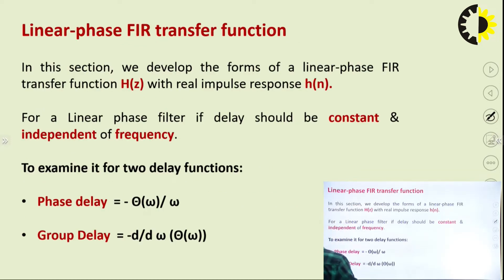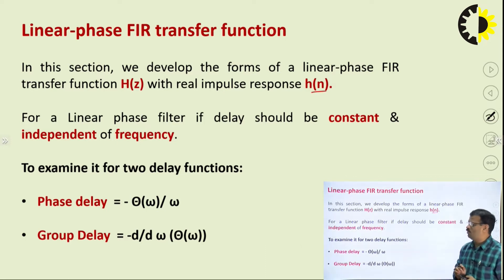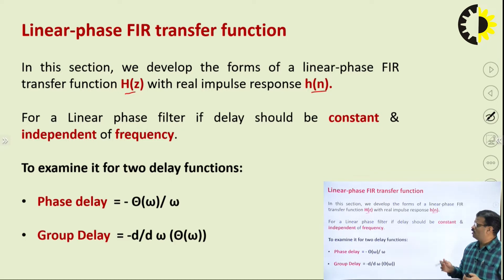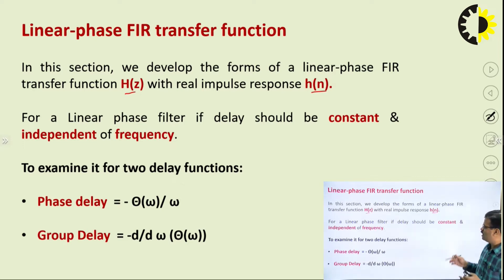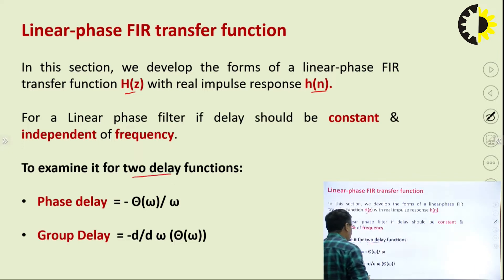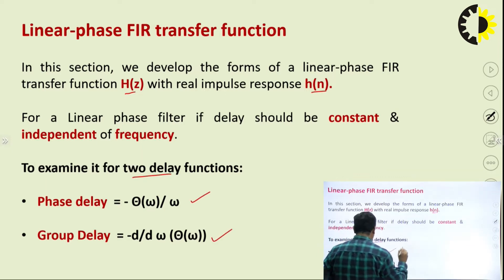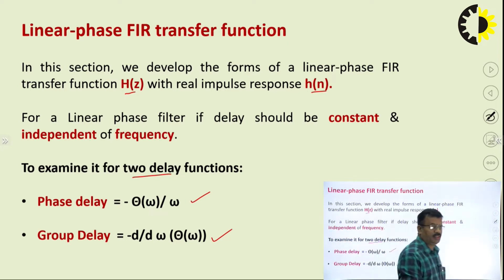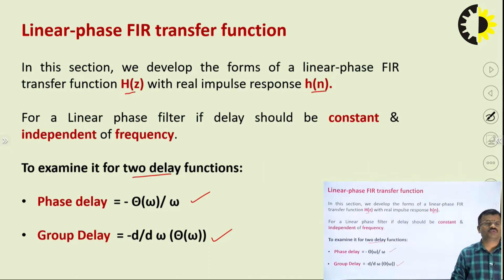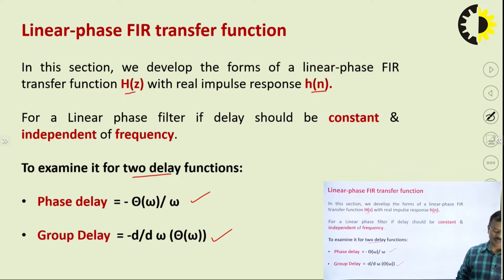Now, what is the meaning of linear phase for an FIR filter? If h(n) is the impulse response of an FIR filter, its transfer function is H(z). For a linear phase filter, the delay must be independent of frequency and have a constant value. There are two types of delay: phase delay, which is −θ(ω)/ω, and group delay, obtained by differentiating the phase. If the delay is constant and independent of frequency, we say the FIR filter has linear phase.